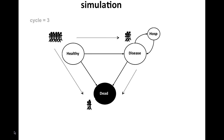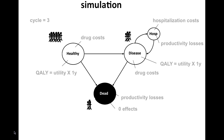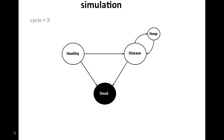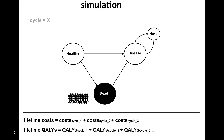The model leaps a year forward again to cycle 3, and new transitions have occurred. Even more individuals have developed the disease, and some of those have died as well. All costs and effects that occur in the different states are summed up and registered. This process continues cycle by cycle until all individuals of the cohort are in the state dead — then the simulation stops. Finally, the total costs and effects from all cycles are summed up to give the lifetime costs and effects, and the simulation is completed.